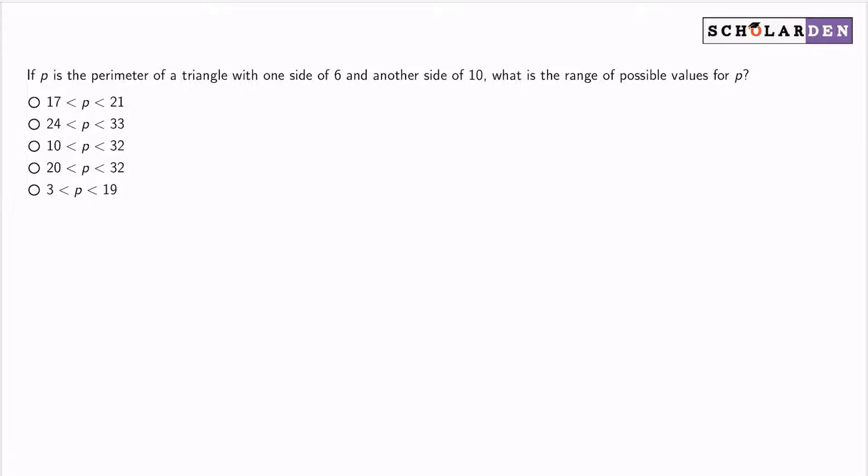All right, the answer here is D, 20 is less than P is less than 32, or P is between 20 and 32 non-inclusive.